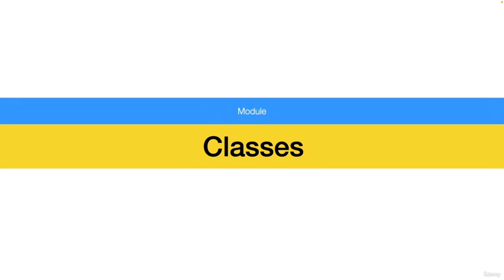Then we'll also see constructors in detail, the parameters, access modifiers like private, public, and protected. Then we'll also see overriding, overloading, abstract classes, getters, setters, static properties, static methods, and many more exercises in this module.